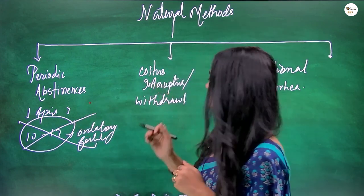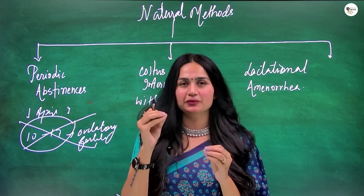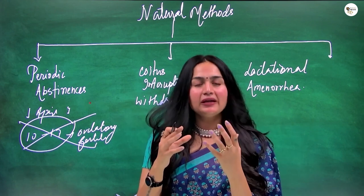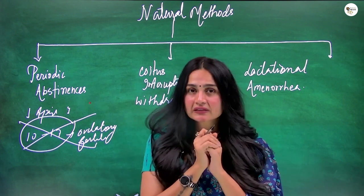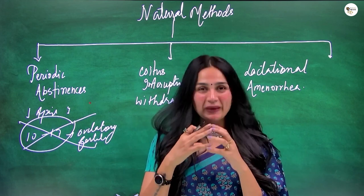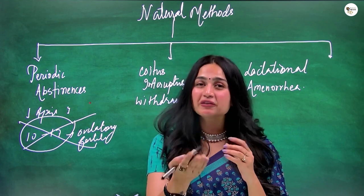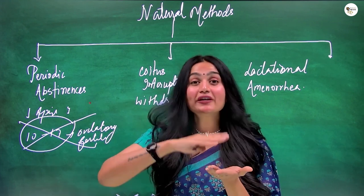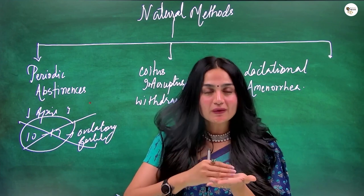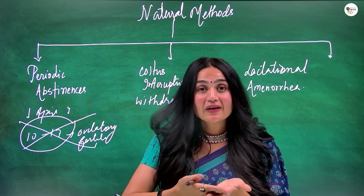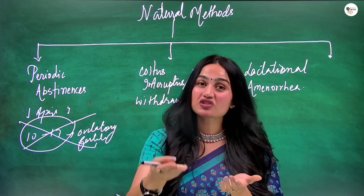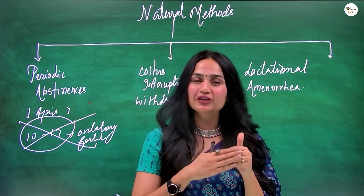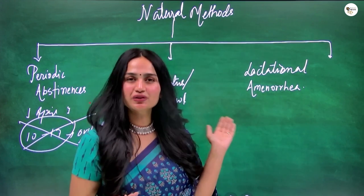The second natural method is coitus interruptus, also called withdrawal. Coitus means the insertion of the penis into the vagina. During intercourse, the male normally releases sperm into the vagina. In this method, the male withdraws the penis before ejaculation, so sperm comes out of the vagina rather than inside it, preventing the sperm from meeting the egg.